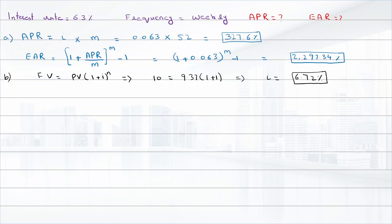Now we can find APR and EAR. APR will be 6.72 percent multiply by 52, that will be 349.63 percent.